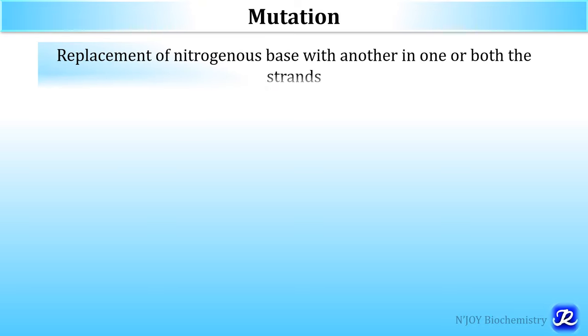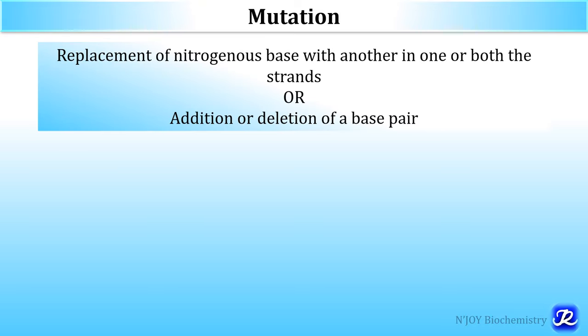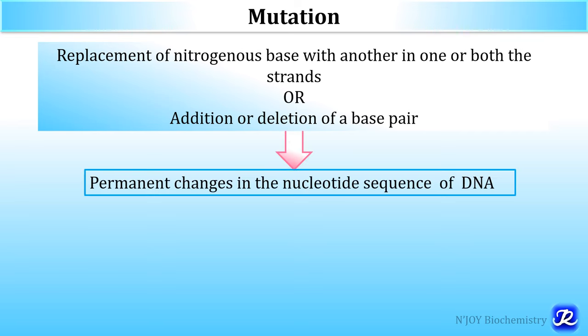What is mutation? Mutation is the replacement of a nitrogenous base with another in one or both strands of DNA, or addition or deletion of a base pair. This replacement leads to permanent changes in the nucleotide sequence of DNA. Mutations in germ cells are transmitted to the next progeny and may give rise to various inherited diseases. Mutations in somatic cells are not transmitted to the progeny but are important in the causation of cancers and some congenital malfunctions.